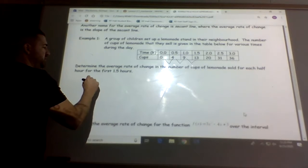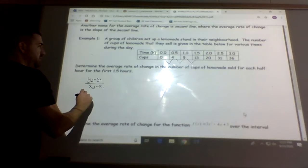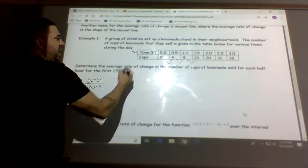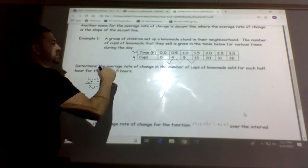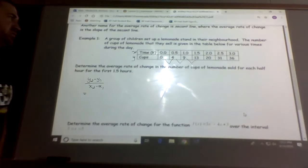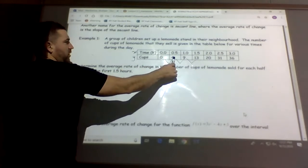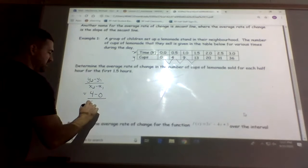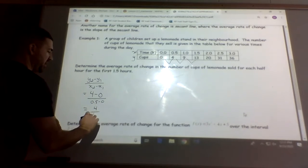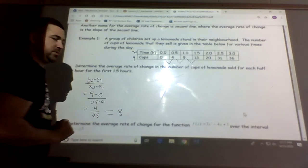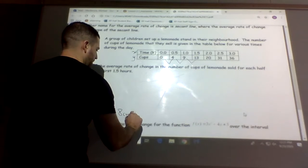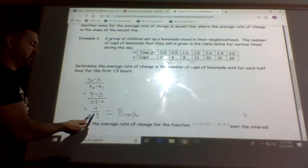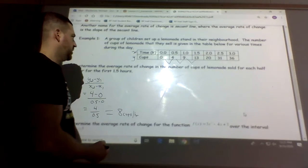So we're going to have y2 minus y1 over x2 minus x1. So in our first one, our y2, remember on a graph your first column or row is always your x values. So there's your x, and then the second one is always the y or your f of x. So the first row or column is always your x, and the next one is y. So y2, so we have 4, subtract y1 which is 0, so 4 minus 0, and then divide it by 0.5 minus the 0. So you get 4 divided by 0.5, which gives you 8. So that would be 8 cups per hour.